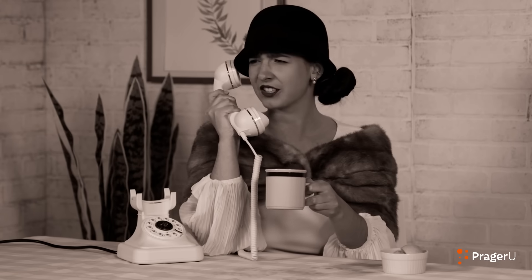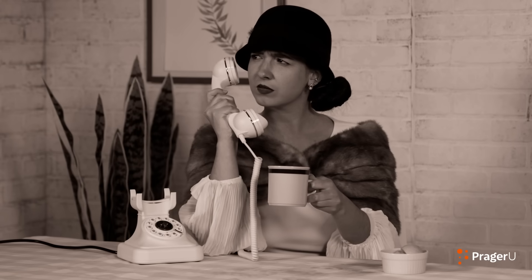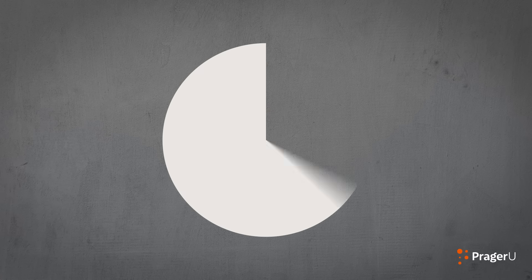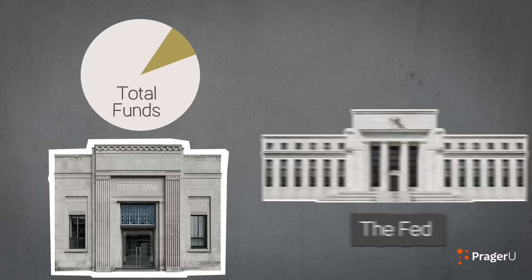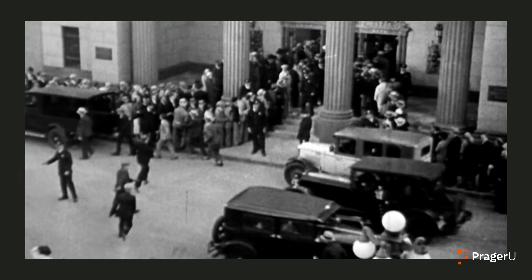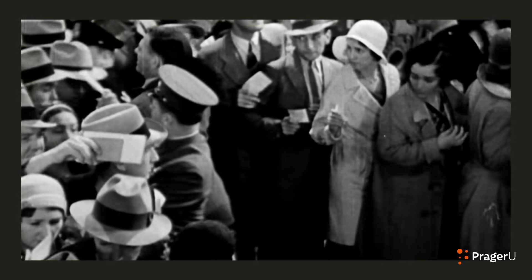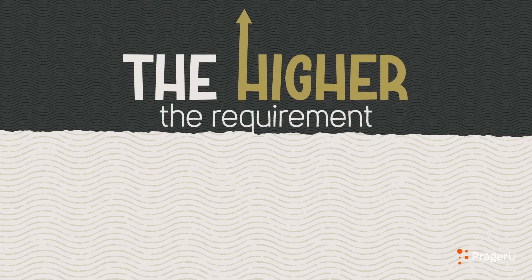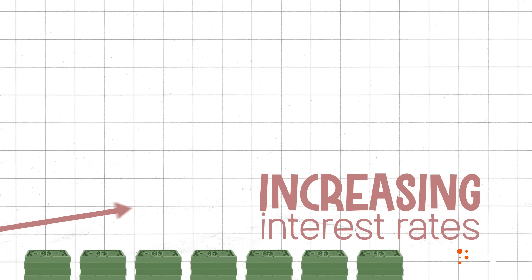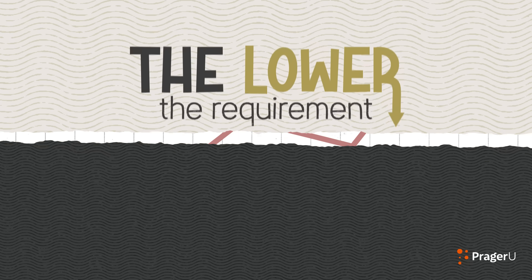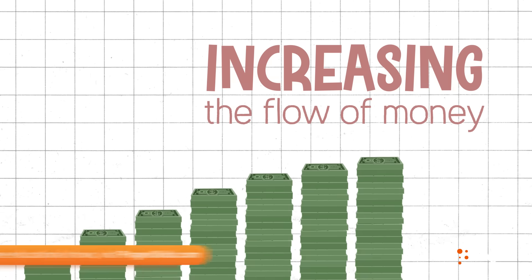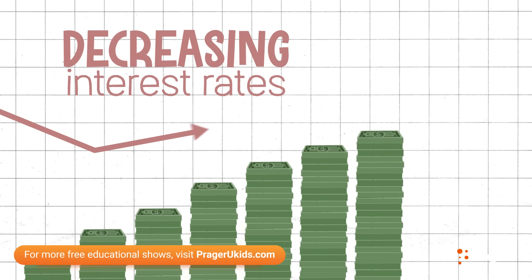But how does the Fed affect the rate? That's where the second thing comes in: the Reserve Requirement. This is the percentage of a bank's total funds that must be held in reserve at the Fed, to make sure banks can meet their obligations in case of sudden withdrawals. The higher the requirement, the less money banks can lend out, reducing the flow of money and increasing interest rates. The lower the requirement, the more money banks can lend out, increasing the flow of money and decreasing interest rates.